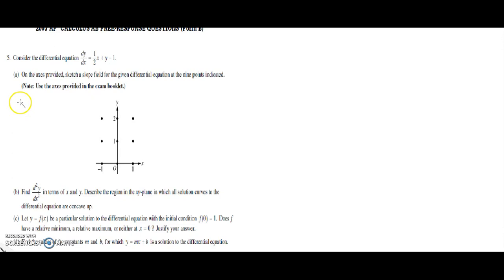What you're going to have to do is set up a table with x, y, and m. If you plug in one, one, you're going to get one-half times one is one-half, plus one minus one, which gives you zero. So the slope is going to be one-half, so you gotta draw a slope that looks like one-half.